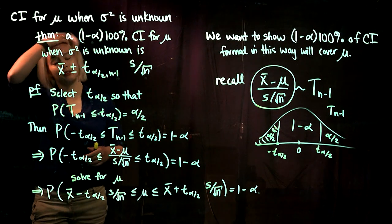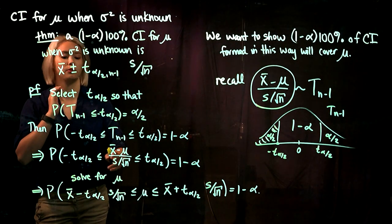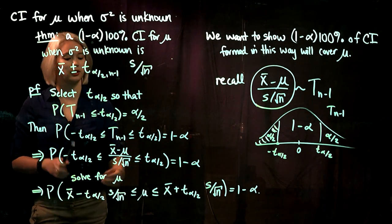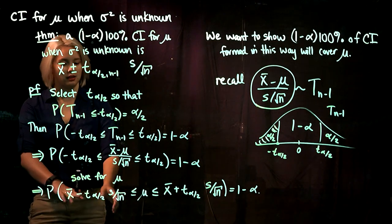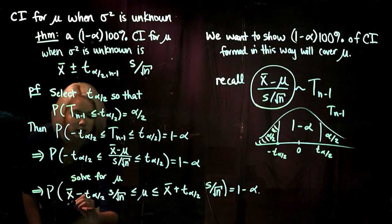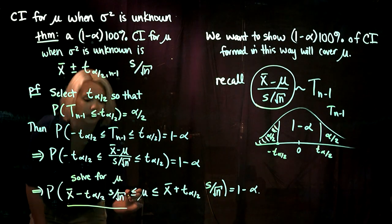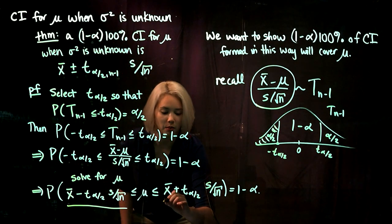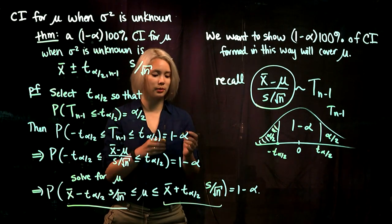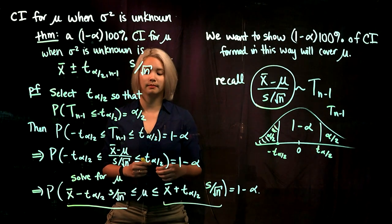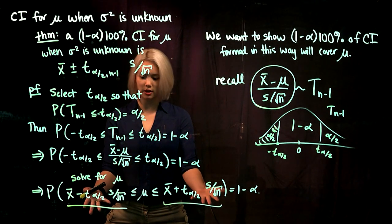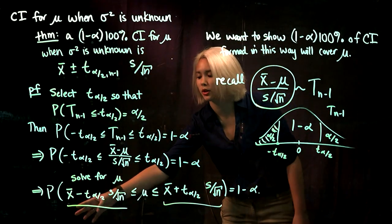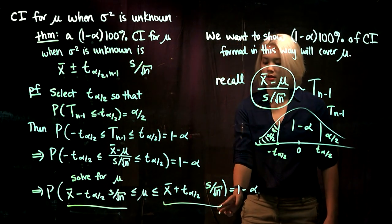Now we do the same thing as we have done in all the previous videos, and we just solve for mu. We rearrange this inner expression so that we have mu in the middle, and we'll end up with x bar minus t alpha over 2 times s over root n as our left endpoint, and then x bar plus t alpha over 2 times s over root n as our right endpoint. So now we've done exactly what we're trying to show.